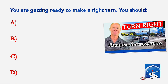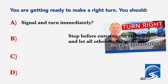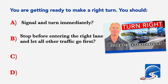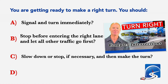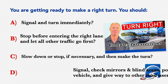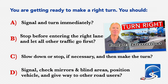You are getting ready to make a right turn. You should: A: Signal and turn immediately. B: Stop before entering the right lane and let all other traffic go first. C: Slow down or stop if necessary and then make the turn. D: Signal, check mirrors and blind areas, position vehicle and give way to other road users. Correct answer D: Signal, check mirrors and blind areas, position vehicle and give way to other road users.